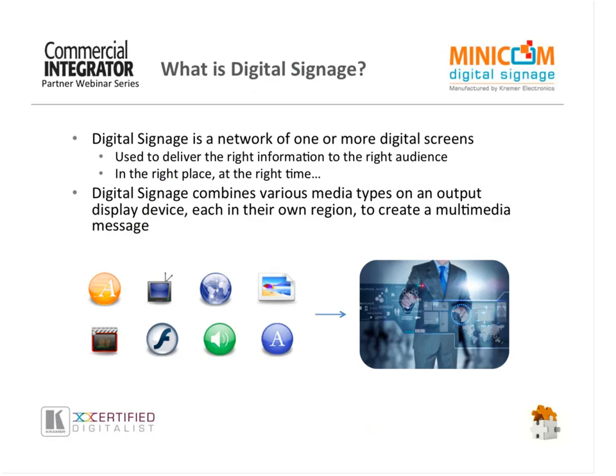Before we get started, I want to make sure we're all on the same page when it comes to the definition of digital signage. Kramer's definition is that it is a network of one or more digital screens or display devices used to deliver the right information to the right audience in the right place at the right time. Digital signage combines various media types on an output display device, each in their own region, to create a message. It is suitable for one to multiple thousands of displays, and can be on a local, municipal, national, or global scale.